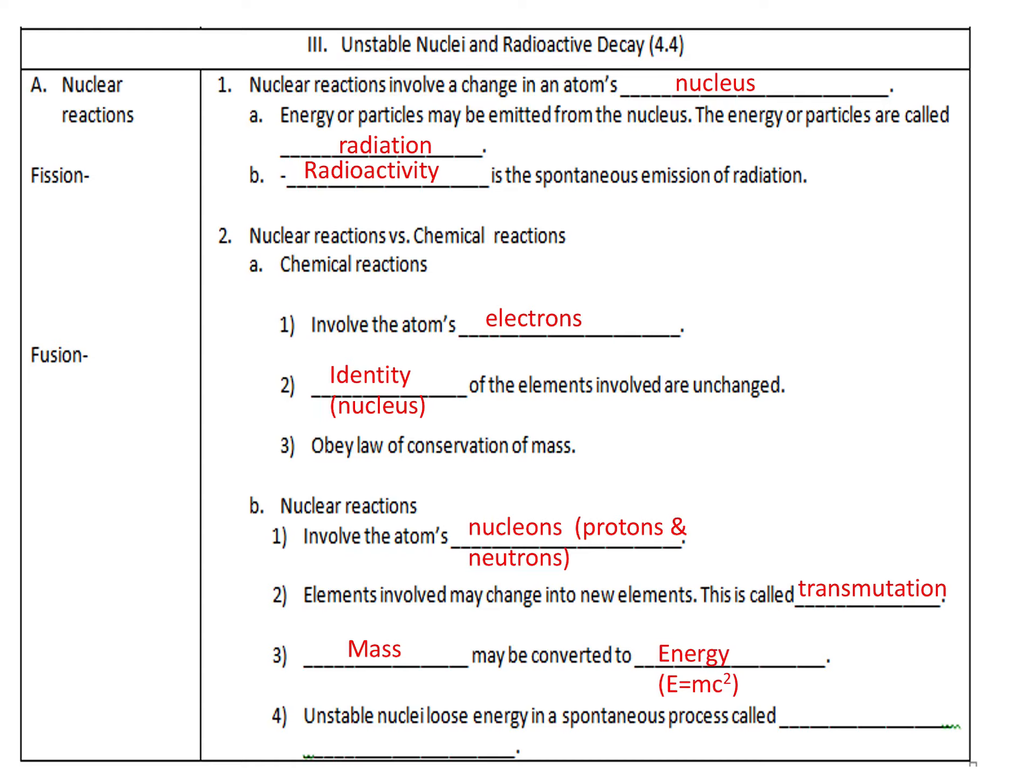Mass, instead of being conserved, can be converted into energy. And that amount of energy can actually be calculated with Einstein's famous E equals mc squared equation. And the unstable nuclei are then going to lose energy in a process called radioactive decay.